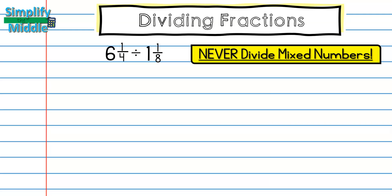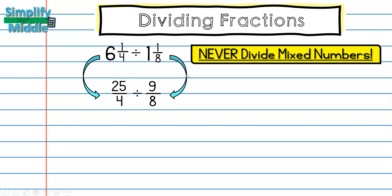For the dividend: 6 times 4 is 24, plus 1 is 25, so 6 and 1/4 is really 25/4. For the divisor: 8 times 1 is 8, plus 1 is 9, so 1 and 1/8 is really 9/8. Now I have a division problem with two improper fractions.